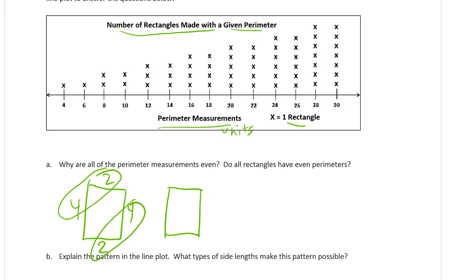That's with even numbers — two fours and two twos is 12. But what if we have a 2 and a 1? Then we have two threes, and that's 6. So it doesn't matter whether you start with even or odd sides; it's always going to be a double of something, because you add the length and the width and double it — that's how you get the perimeter.